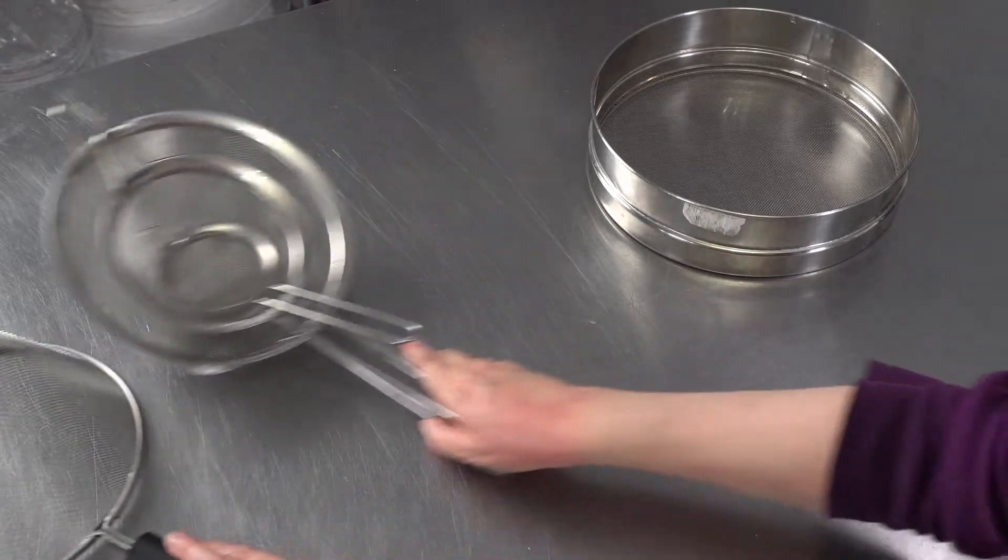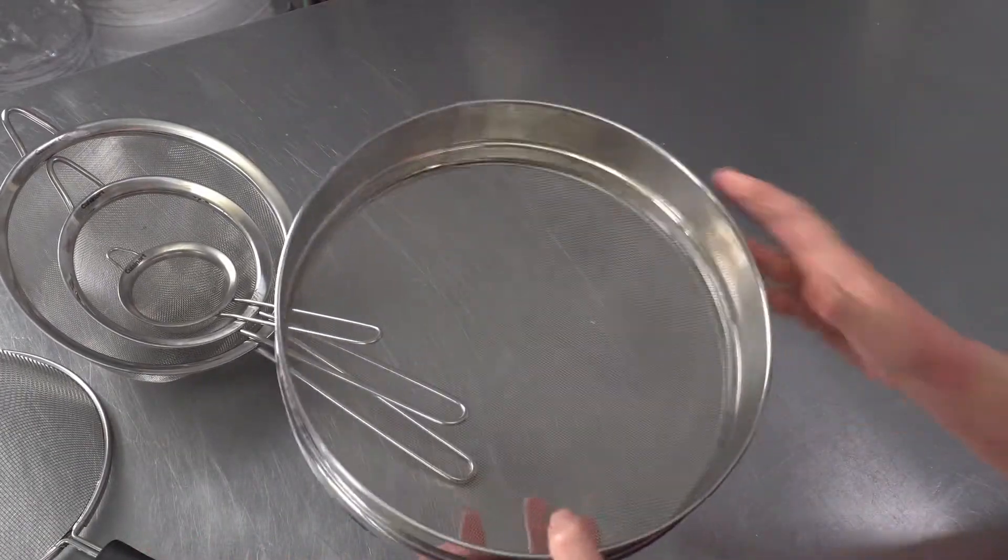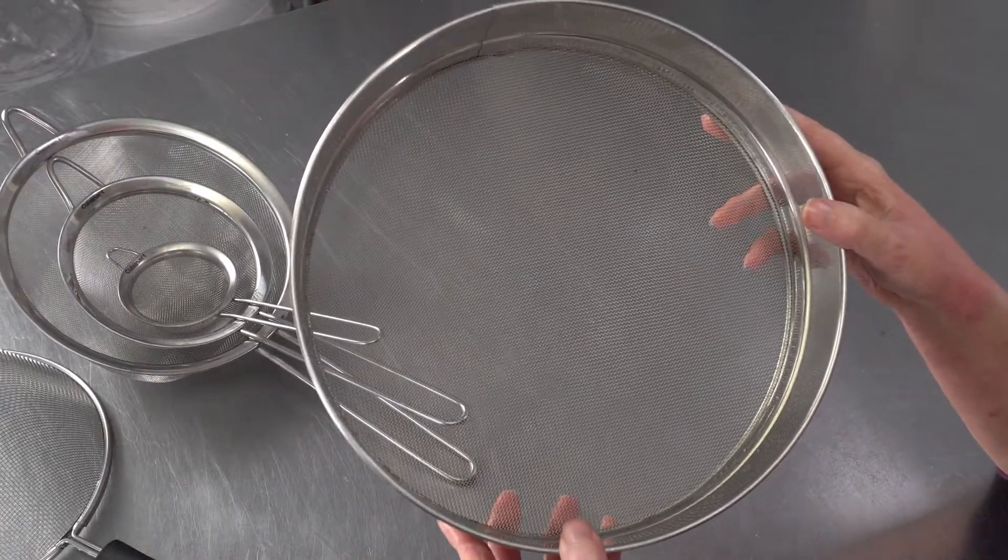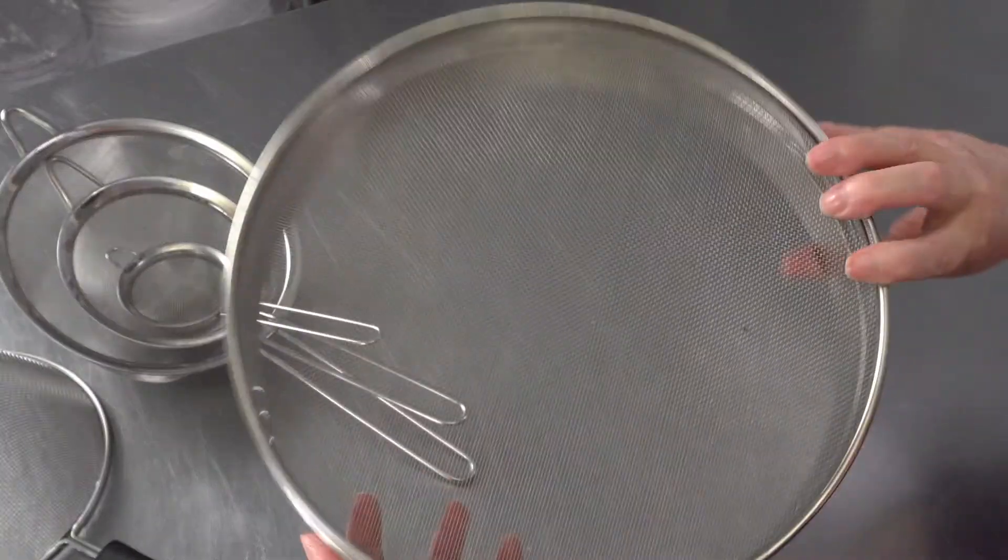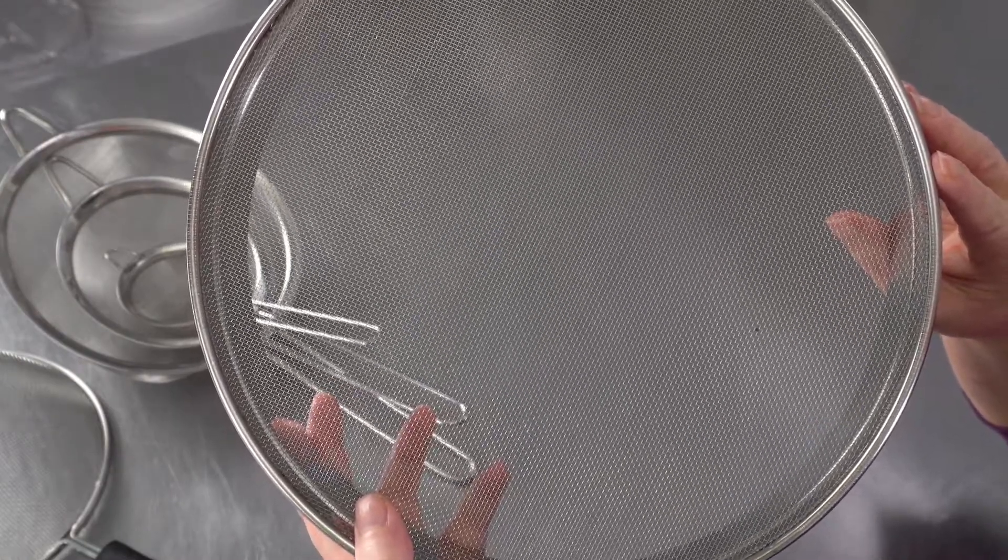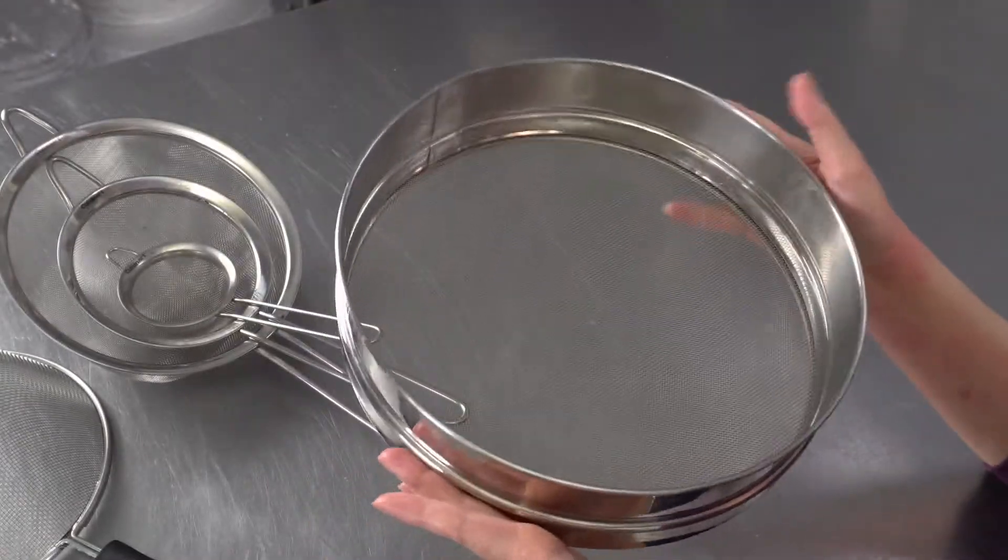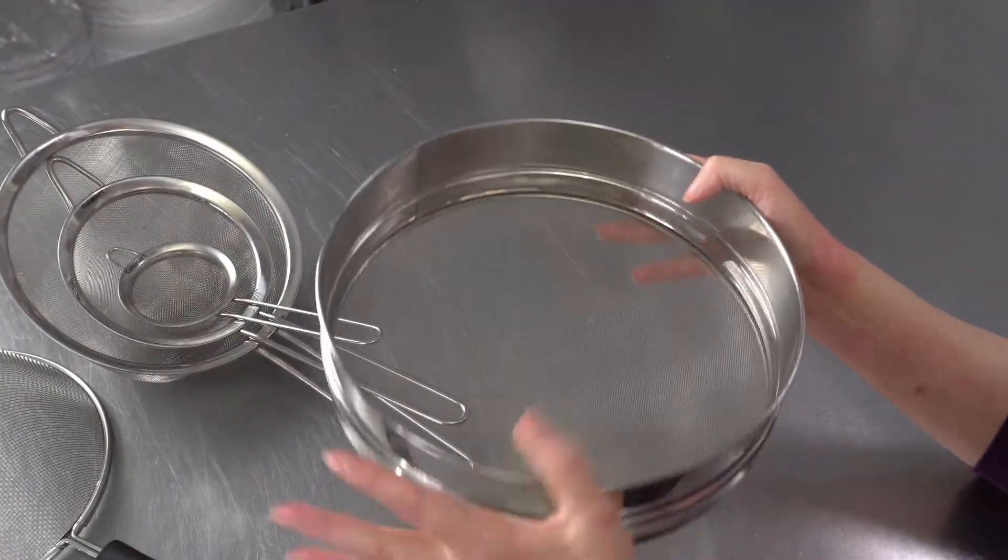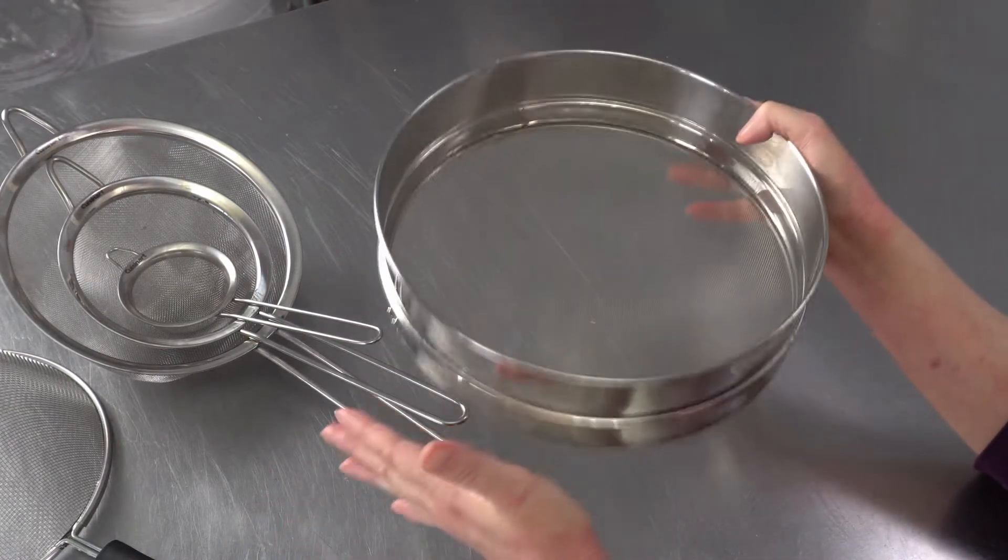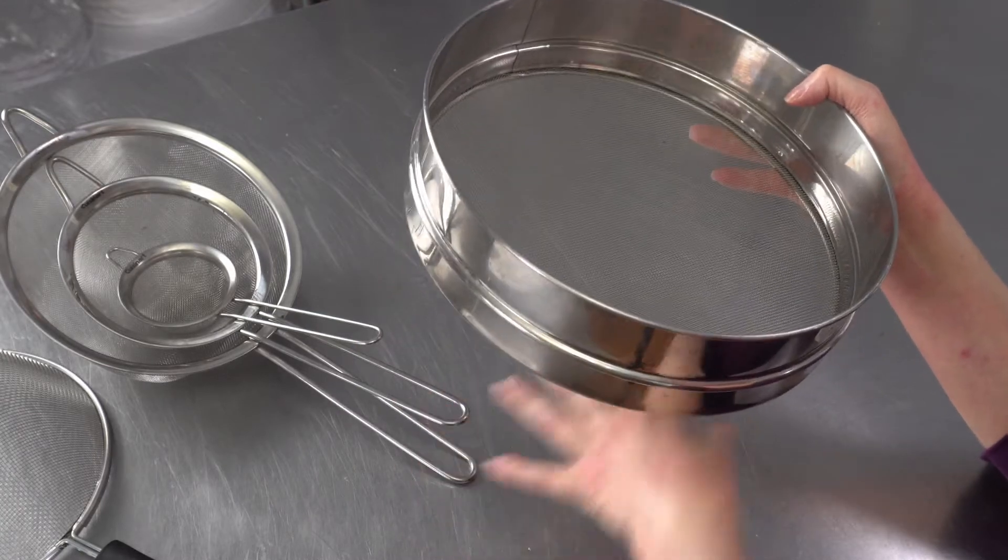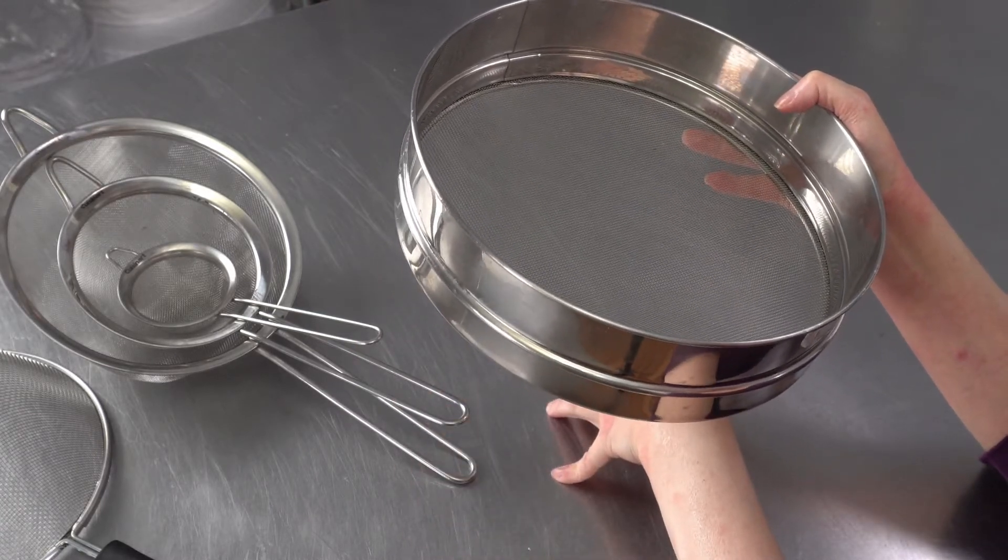The second style that we use is what's called a TAMIS or drum sifter. You notice it looks a lot like a cake pan, except the bottom, instead of being solid, is your mesh. These are really great if you have to sift large volumes of stuff, because you can put a lot in here and it's kind of like panning for gold. You can just tap the sides and you're getting a lot of product flowing directly down onto your surface.